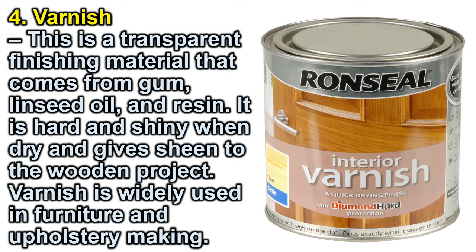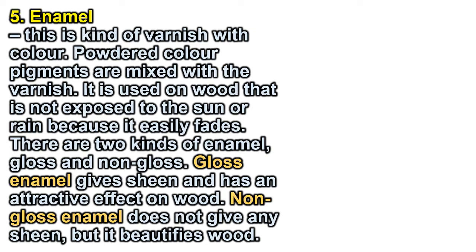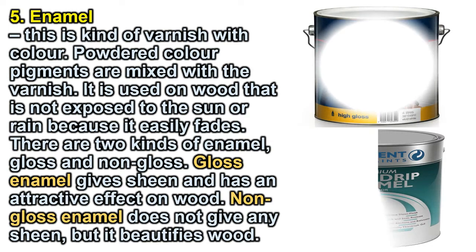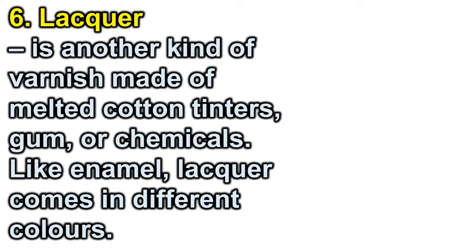Number 5 — Enamel: a kind of varnish with color — powdered color pigments are mixed with the varnish. It is used on wood not exposed to the sun or rain because it easily fades. There are two kinds: gloss and non-gloss. Gloss enamel gives sheen and has an attractive effect on wood; non-gloss enamel does not give any sheen but still beautifies wood. Number 6 — Lacquer: another kind of varnish made of melted cotton, tinters, gum, or chemicals. Like enamel, lacquer comes in different colors.